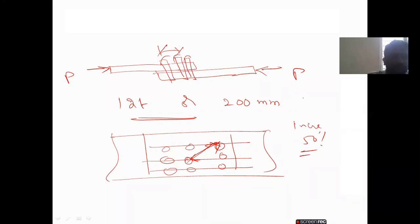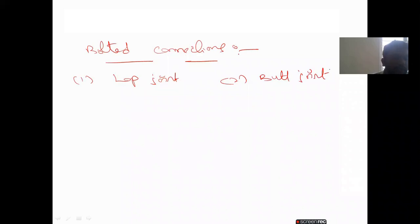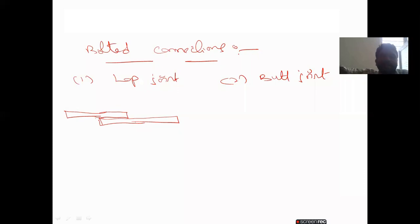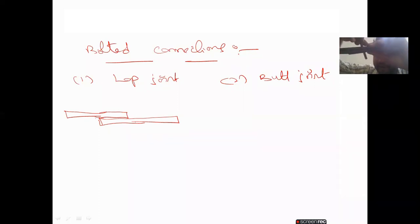One more important thing in bolted connections: the first type is lap joint. The lap joint is the simplest way — I will draw here for your understanding. When two plates are connected by overlapping one over the other, that type we call a lap joint. The connection where plates overlap each other with bolts is a lap joint.